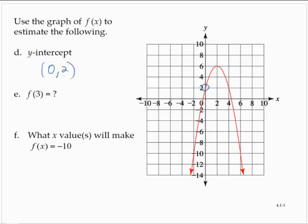F of 3. We did these back in chapter 1, I think. When the input is 3, determine the output. When the input is 3, the output looks to be about 5. So I would say that f(3) is equal to 5.